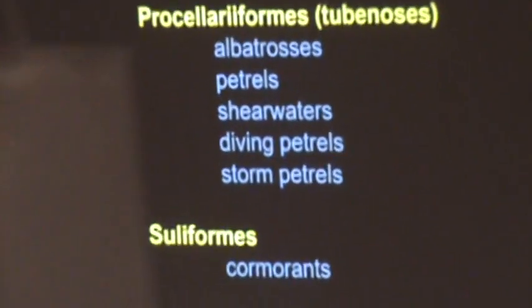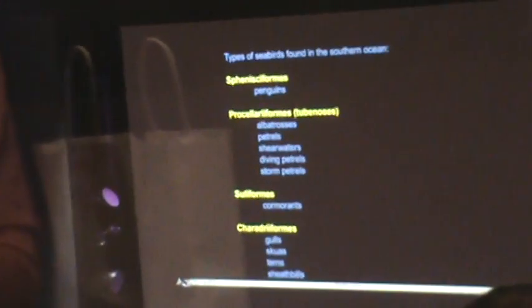The only types we find in these waters are in these four groups here: the penguins, the albatrosses and petrels (that big group in the middle there), then there's the cormorants and a separate group, and a sort of catch-all group called the Charadriiformes—the gulls and the skuas and the terns, etc. So just those four have representatives in the Deep South.